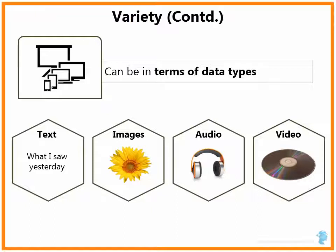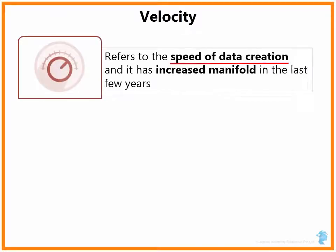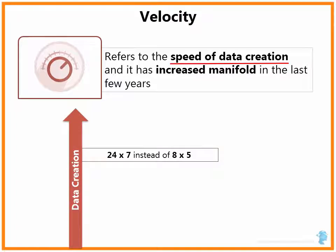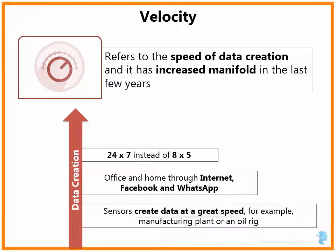The third and final V, velocity, refers to the speed of data creation, which has increased manifold in the last few years. People are creating data 24x7 instead of 8x5, which was the case earlier. Data is generated not only in the office but also at home through the internet, Facebook, WhatsApp, etc. There are also sensors that create data at great speed — for example, a manufacturing plant or an oil rig has thousands of sensors that produce various measurements every second.